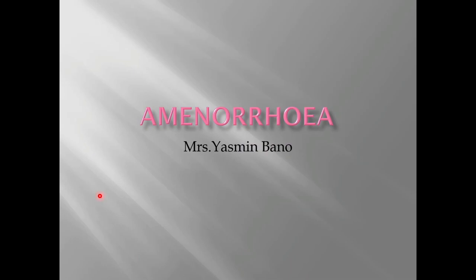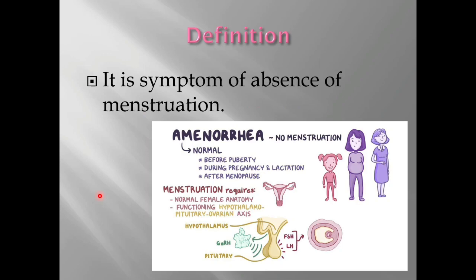Hello, welcome to today's topic: amenorrhea. The definition of amenorrhea is the absence of menstruation. Normally, every woman menstruates every 28 to 30 days, but if menstruation does not come for a long time, this condition is called amenorrhea. Amenorrhea is normal before puberty,